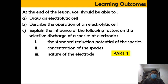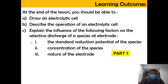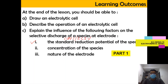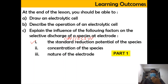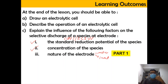We're also going to look into three factors that can influence the selective discharge of a species at the electrode. The first factor is the standard reduction potential, which is the SRP value. The second is the concentration of the species, and the third is the nature of the electrode — whether it is an inert electrode or an active electrode. So let's start.